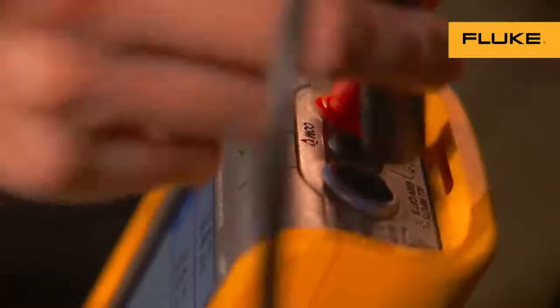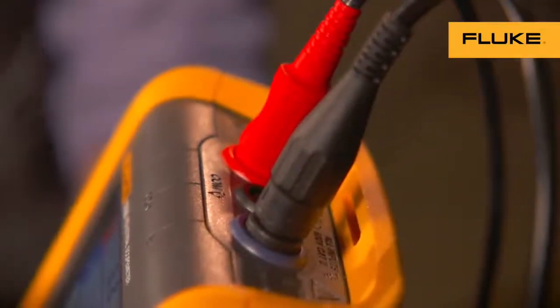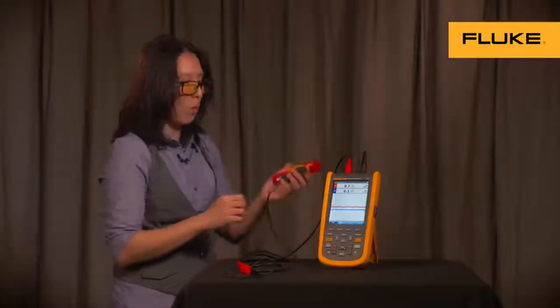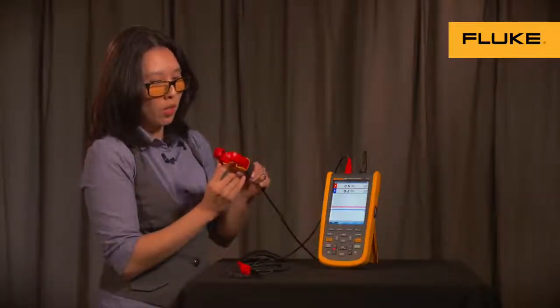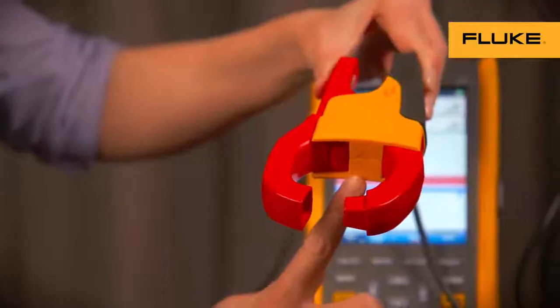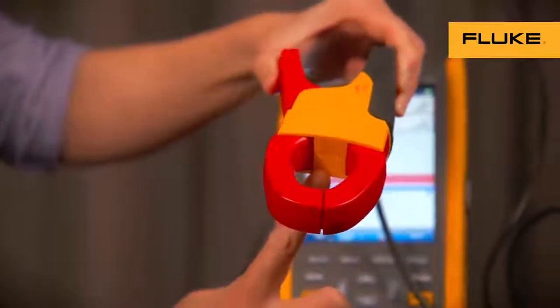Now you can hook your AC current clamp up to the instrument and clamp on to your current source. And keep in mind, when you're clamping on to the current source, this arrow right here on the inside, make sure that it's pointing towards the load.